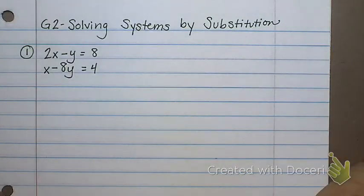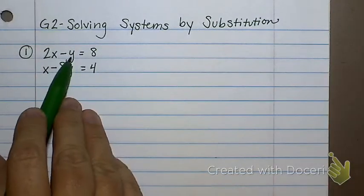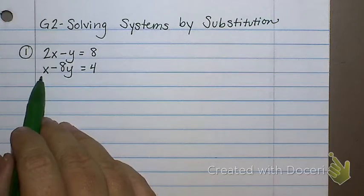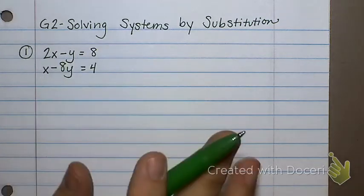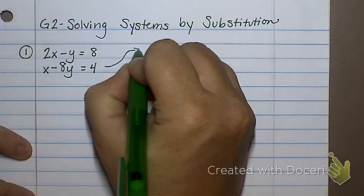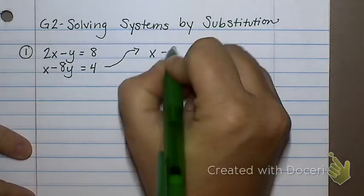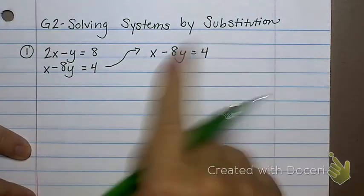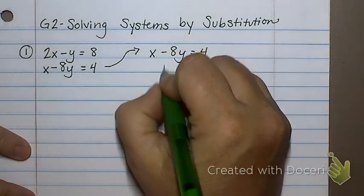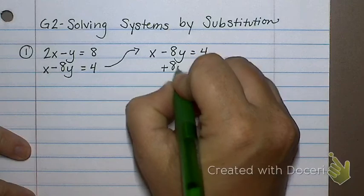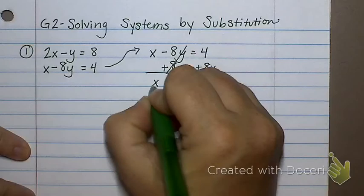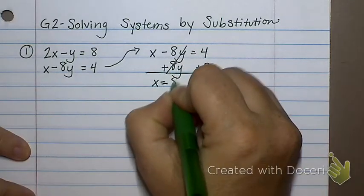So does that exist in either of my equations? Yes, it actually exists in two places, here and here, but only one of those is positive, so I'm going to take the one that's positive. I could take the one that's negative, it's not a huge deal, but life's going to be easier if I get the positive one. So I start off taking that equation, and I'm going to get that x by itself. How do I get it by itself? Add 8y to both sides. So I have x equals 8y plus 4.